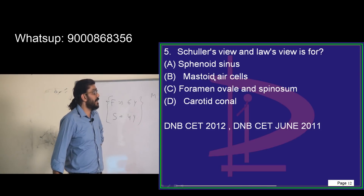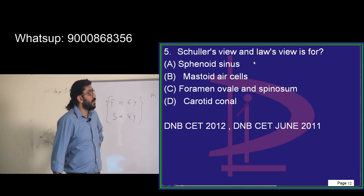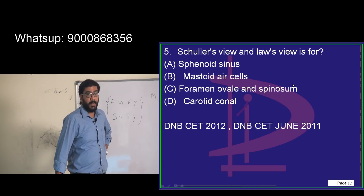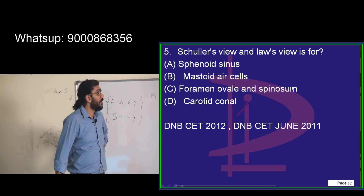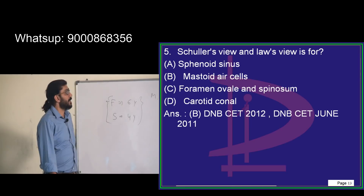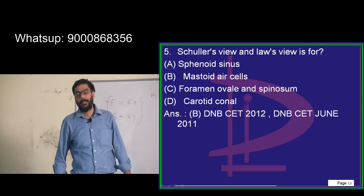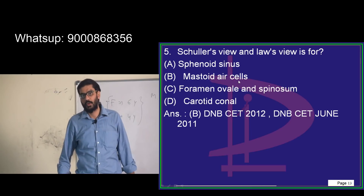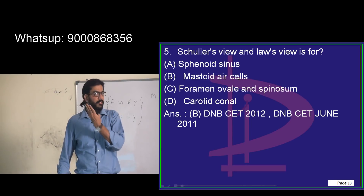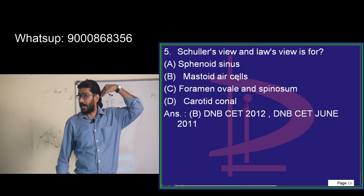The question is: is it sphenoid sinus, mastoid air cells, foramen spinosum, or carotid canal? And for Law's view — is it related to in-law? Brother-in-law, mother-in-law, father-in-law? Something related to this particular bone. The answer is mastoid air cells. So we take a Schüller's view.